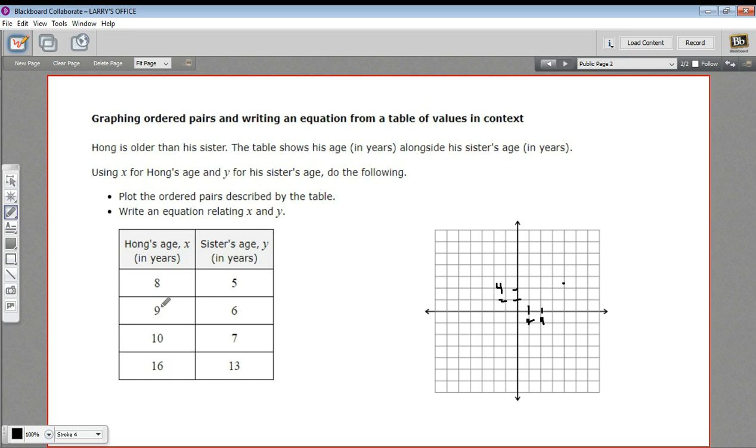Then we want nine and six. So eight, nine, and the six would be right there. And then we want ten and seven, so ten is here and seven would be there.